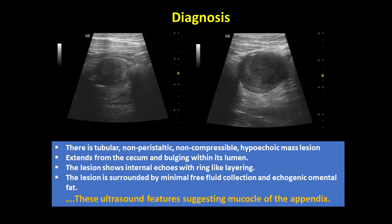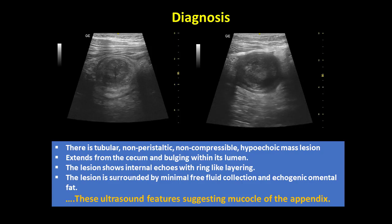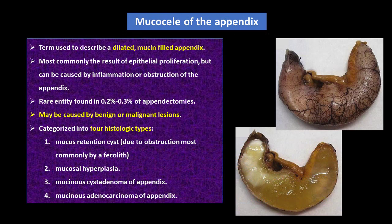These ultrasound features are suggesting mucocele of the appendix. Mucocele of the appendix is a term used to describe a dilated, mucin-filled appendix. It is most commonly the result of epithelial proliferation, but can be caused by inflammation or obstruction of the appendix.